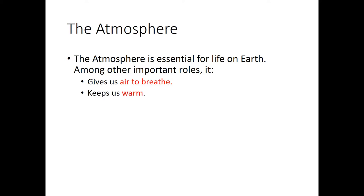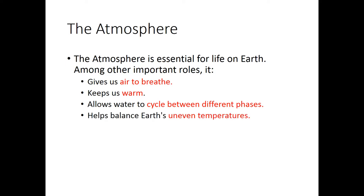The atmosphere gives us air to breathe. It also keeps us warm through greenhouse gases. It acts almost like a filtration system, allowing water to cycle from the ocean to land, giving us fresh water. And the atmosphere also helps balance Earth's uneven temperatures — without our atmosphere, those differences would be much more extreme. The equator would be much warmer and the poles much colder, so the atmosphere helps balance that out.